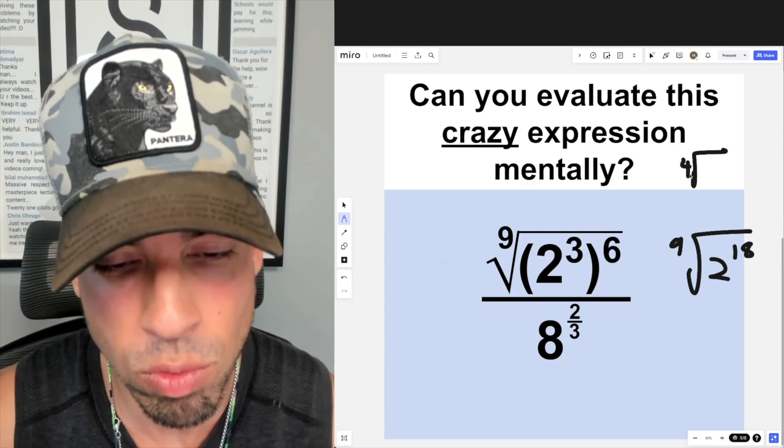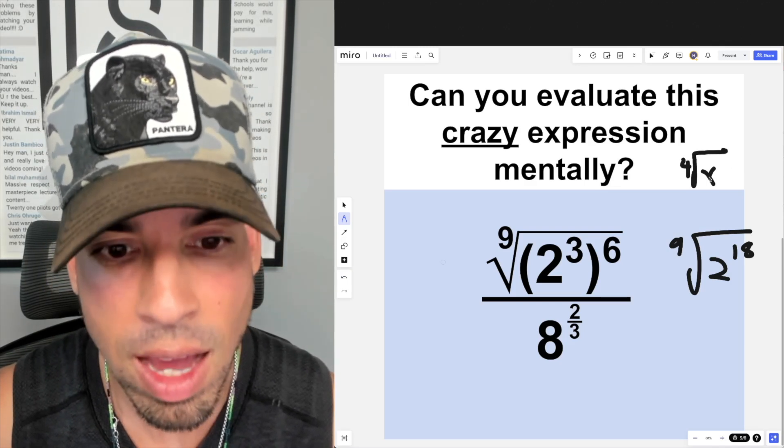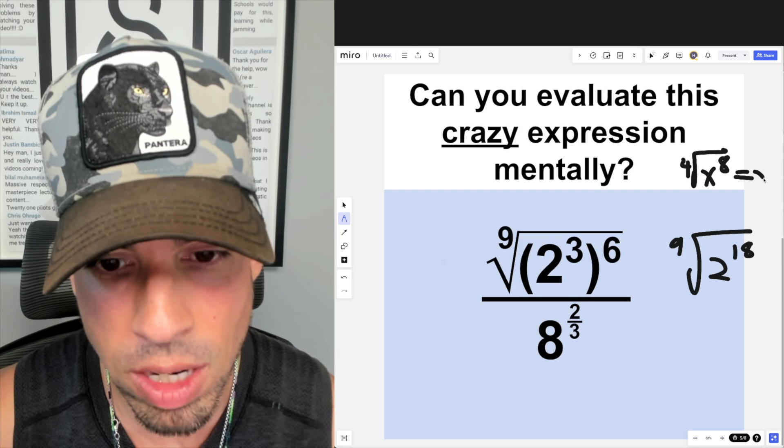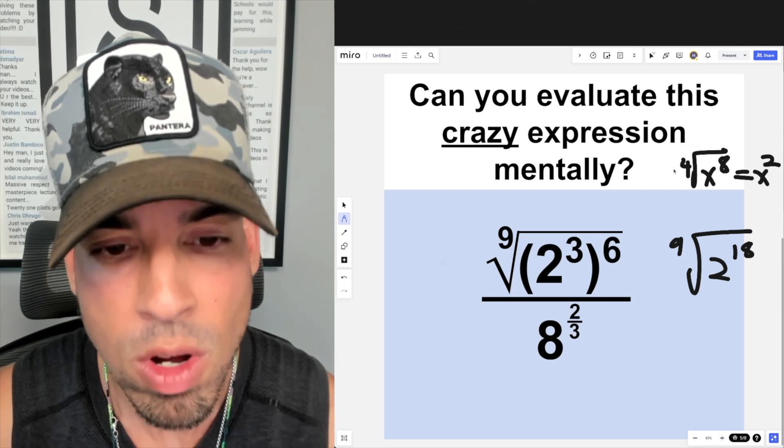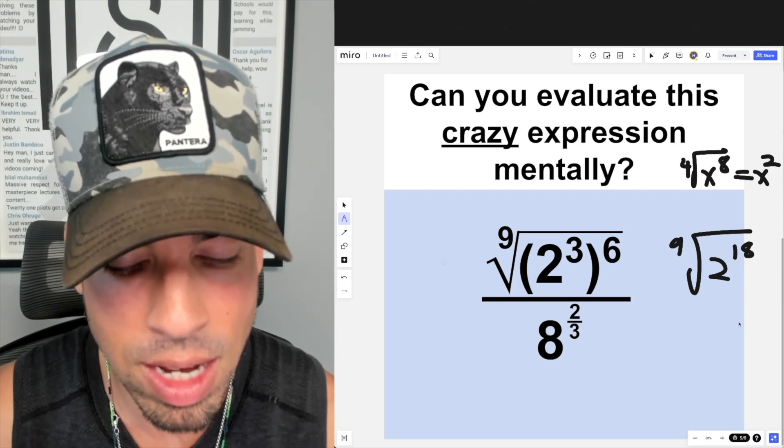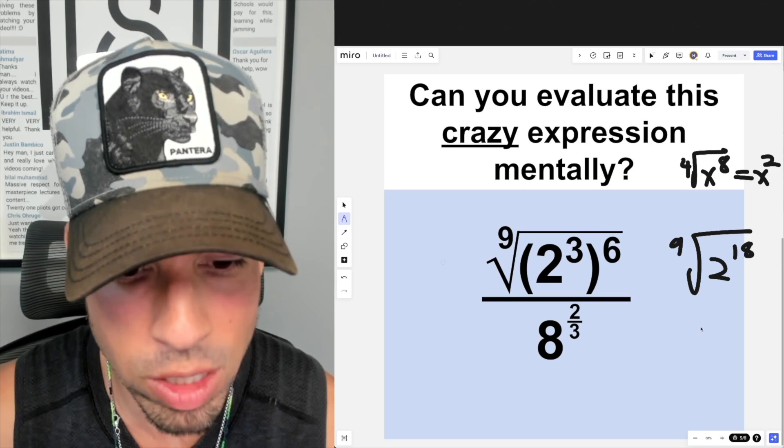For example, if we had the fourth root of let's say x to the eighth, it would come out as x squared. We're dividing 8 by 4. Here we're dividing 18 by 9 and we get 2 squared on top.